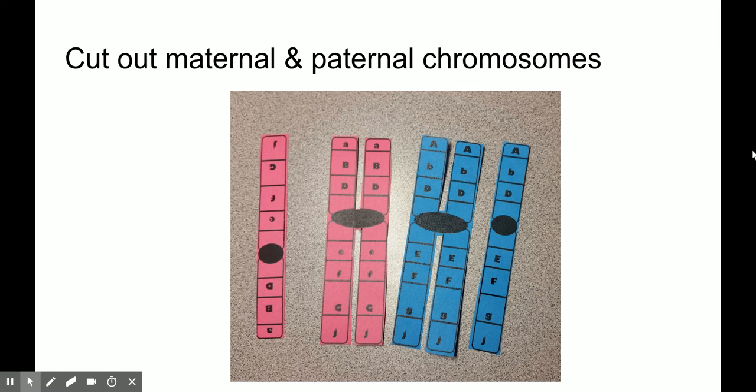The first thing you want to do is cut out the maternal and the paternal chromosomes. The maternal chromosomes, mom's, are going to be represented by the pink chromosome. So cut those out so they look like this. And the paternal chromosomes are going to be the blue ones. And if you cut those off, you'll be all ready to move on to the next section. Feel free to pause until you're ready to move on.